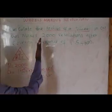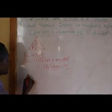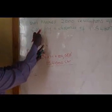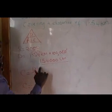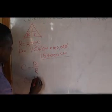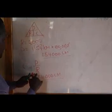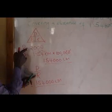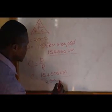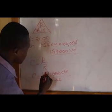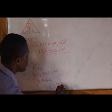The radius is found through the circumference. Using the triangle formula, circumference equals distance over revolutions. So circumference equals 154,000 centimeters over 2,000 revolutions. Three zeros cancel with three zeros, and 154 divided by 2 gives 77. So the circumference is 77 centimeters.